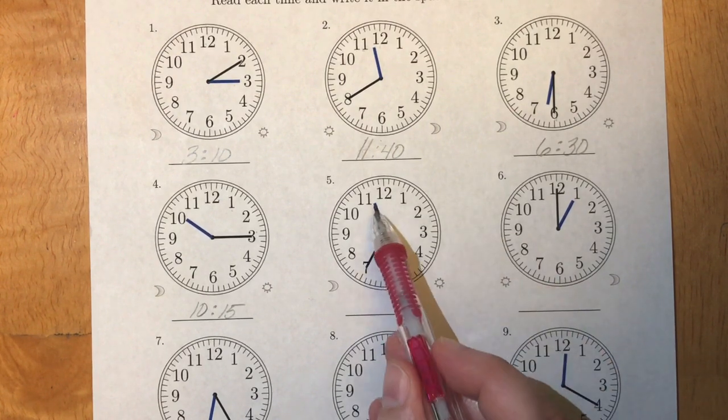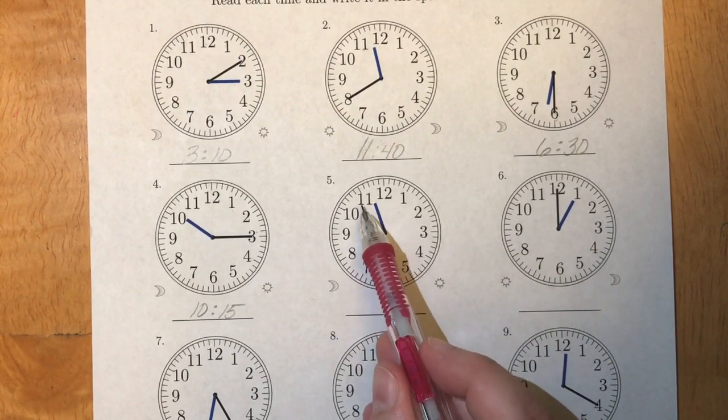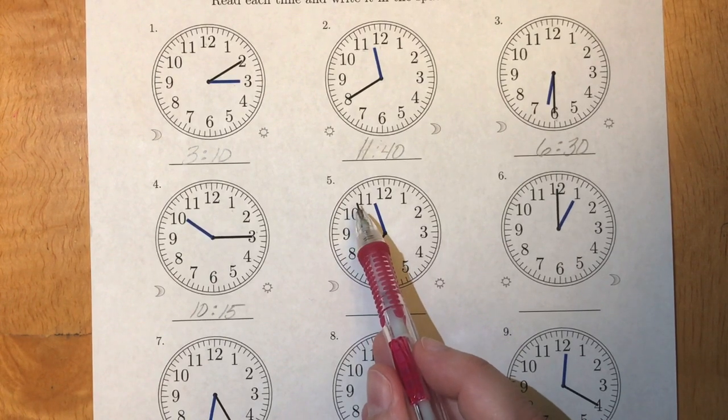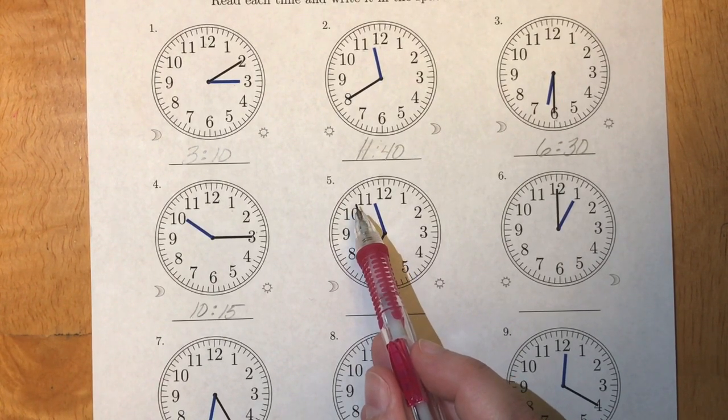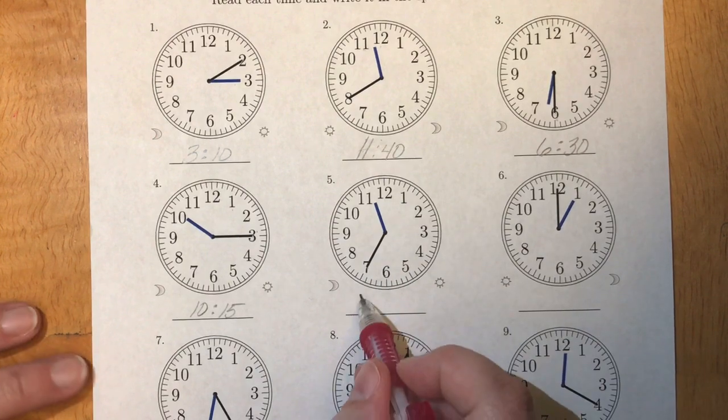Our hour hand is between eleven and twelve. So we're gonna go with the lower of the two, which is eleven. So we're at eleven thirty-five.